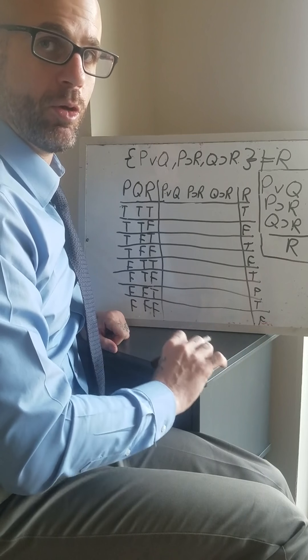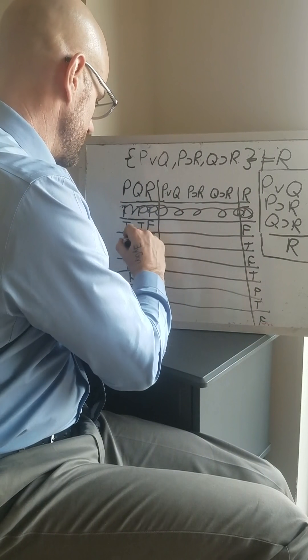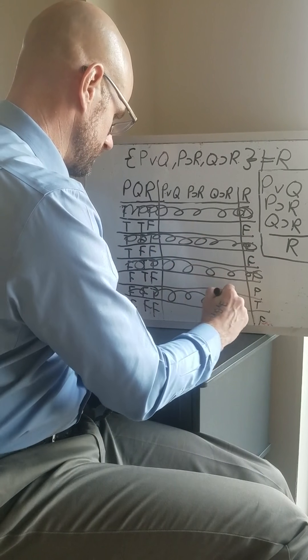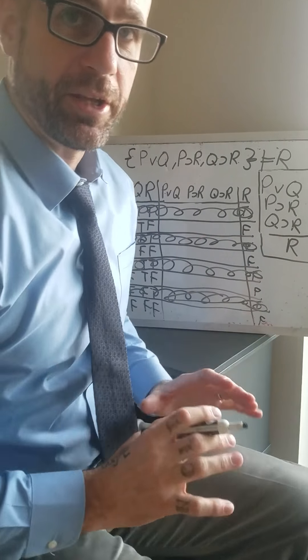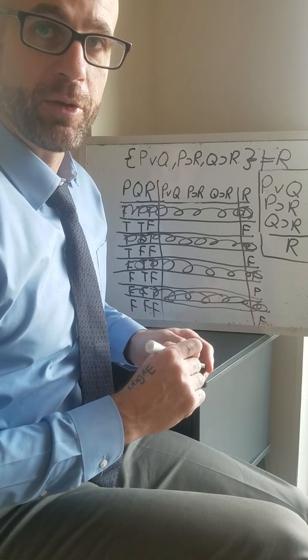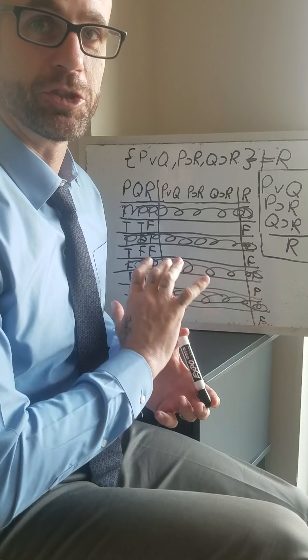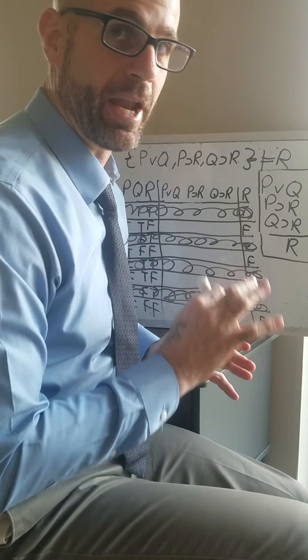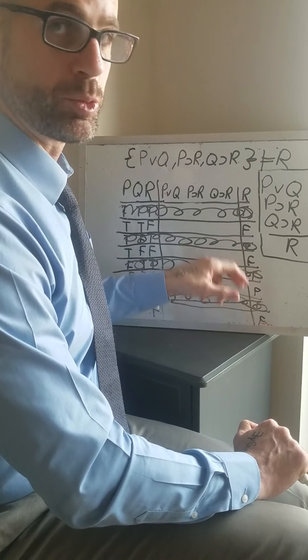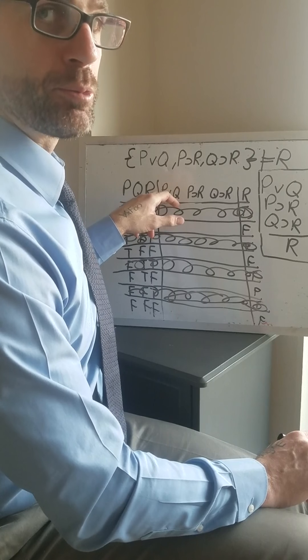Because remember, a counter example is a row that makes all the premises true and the conclusion false. So any row where the conclusion is true, we don't need to worry about it. We don't have to do any check in there at all. So R, I can just look over here and get the values of R. So I'm reading those directly off of this column. And again, any row where R is true, we don't need to check because that's not going to be a counter example. It's not going to be a row making all the premises true and the conclusion false. So let's just go ahead and check the rest of these lines where R is false, where the conclusion is false, and see if any of them are a counter example.